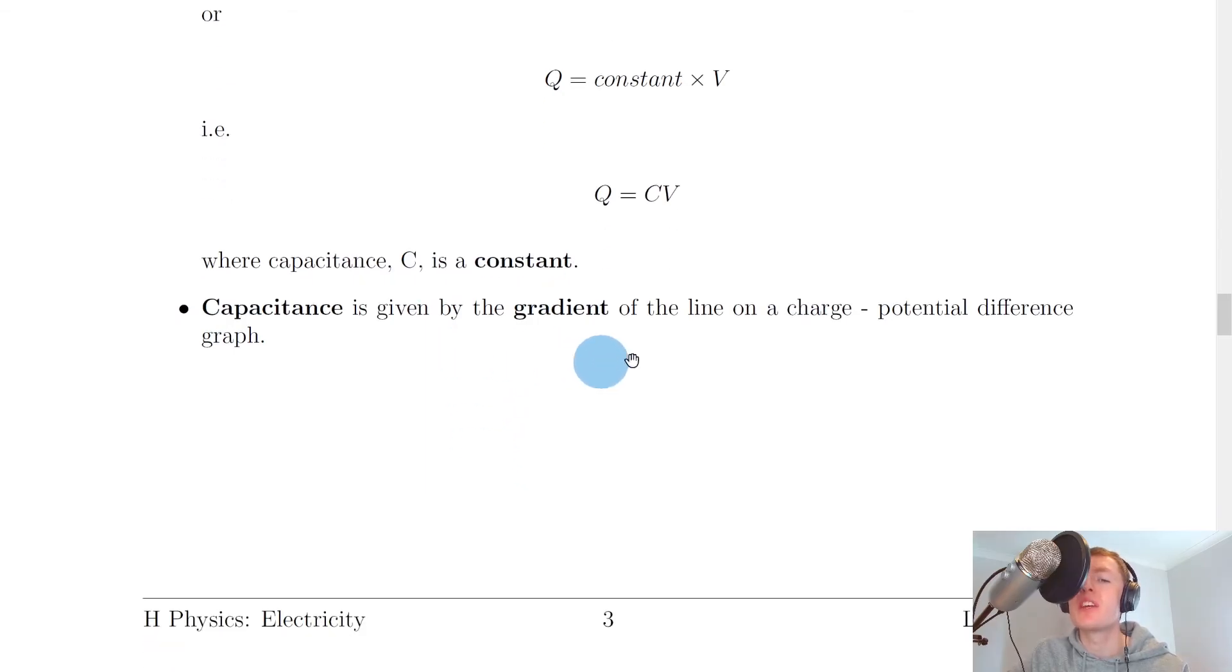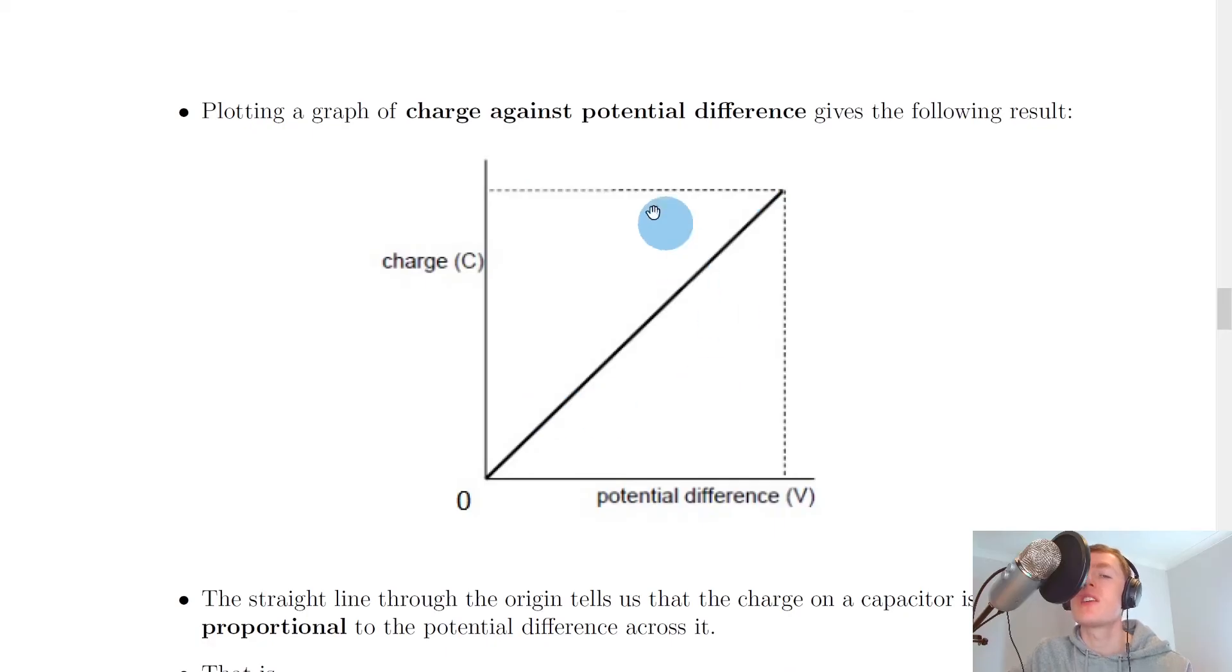And we say that capacitance is given by the gradient of the line on a charge potential difference graph. So looking back at the graph, if you have charge on the y-axis and potential difference on the x-axis, and then you calculate the gradient of this line, remember the gradient of a straight line is going to be the same at all points. And because this is the capacitance of the capacitor, then we say the capacitance will be constant, because it's the same at each point on this line. So choosing two points on this line and doing the change in y over the change in x to get the gradient will give you the capacitance of the capacitor.